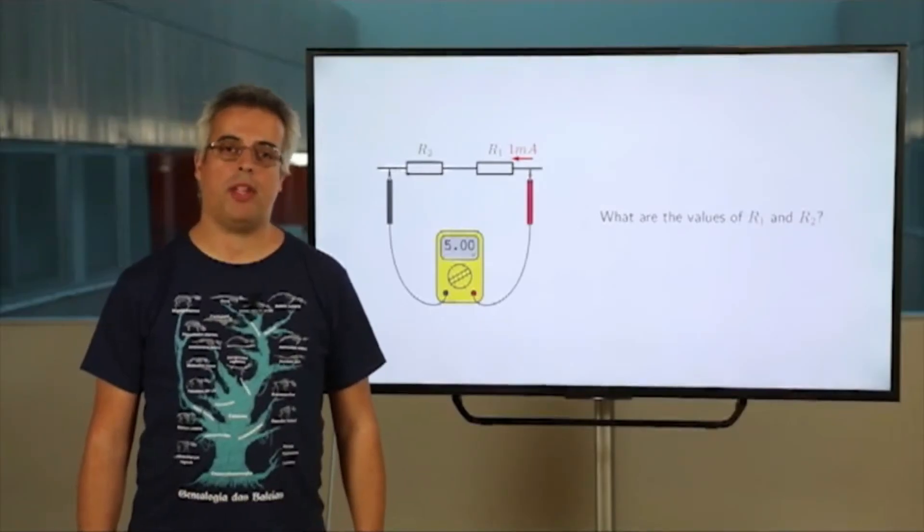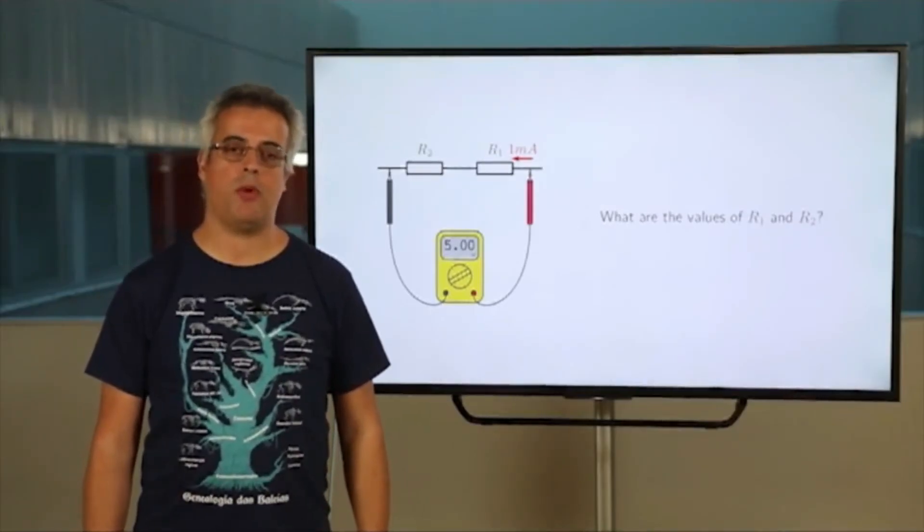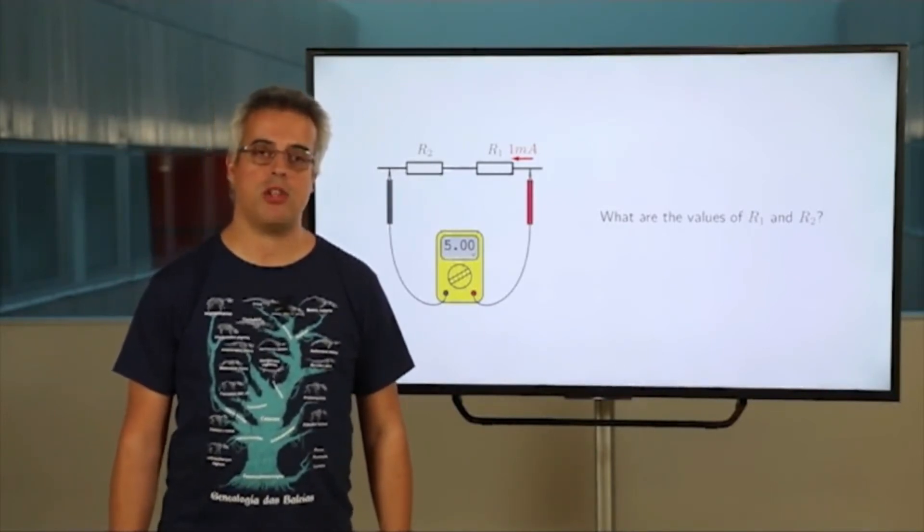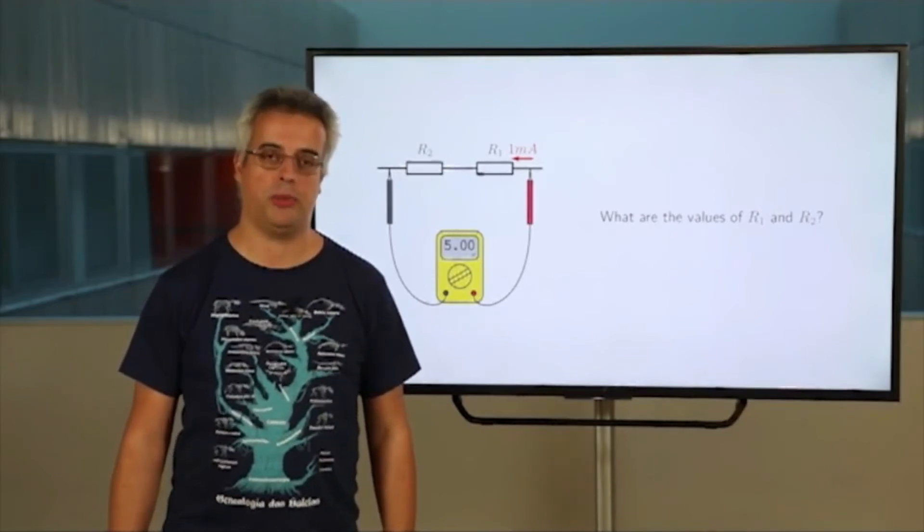Someone could argue that the challenge in this example is that we have two resistors. The next example will show you that the number of resistors is associated, but it is not the core issue.